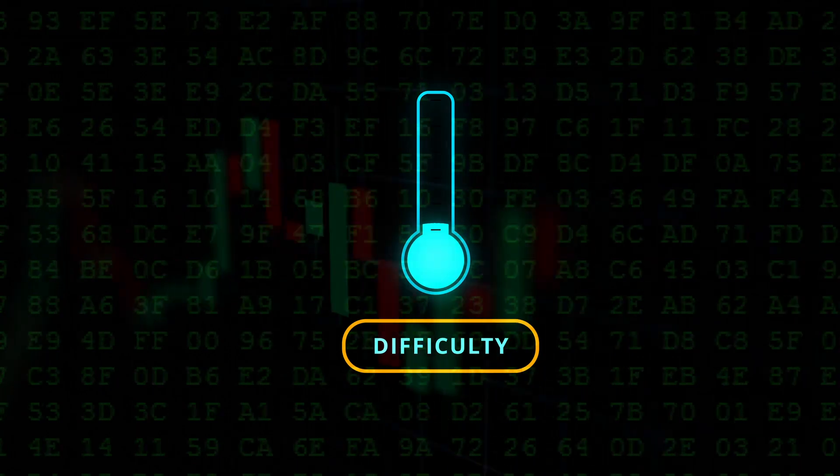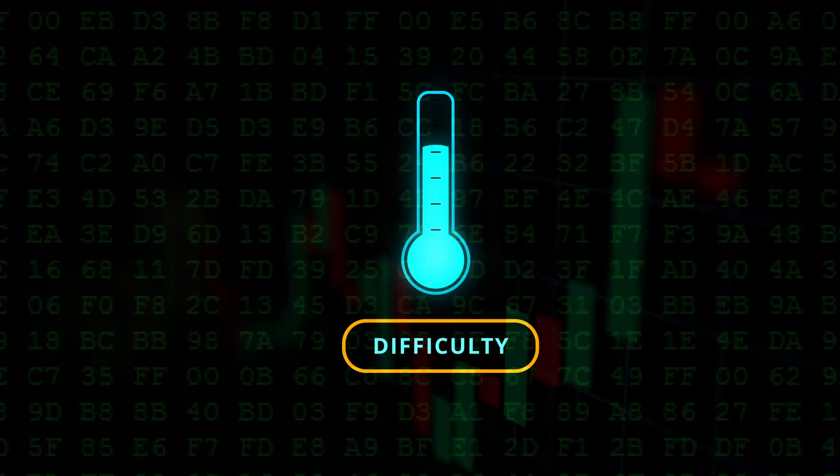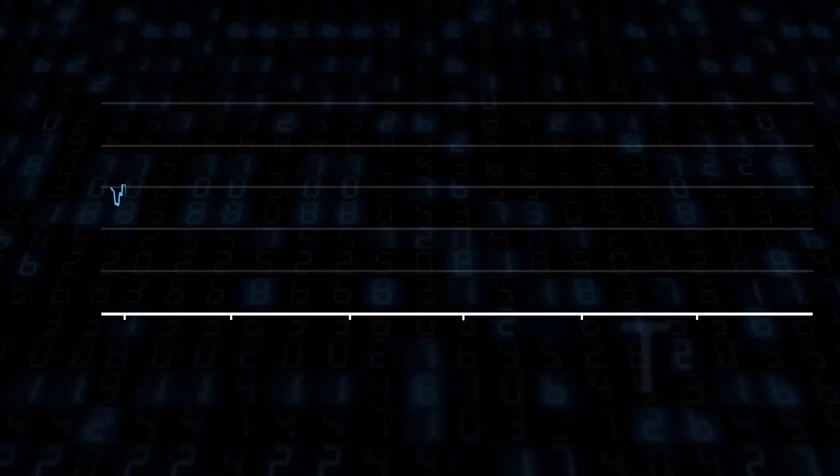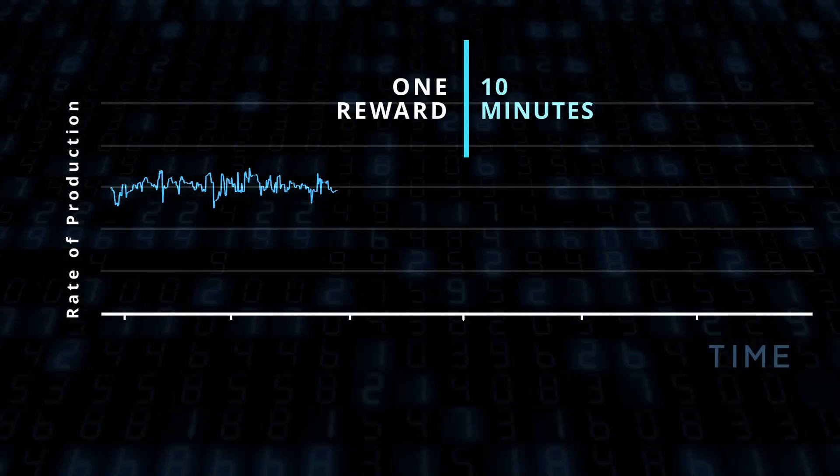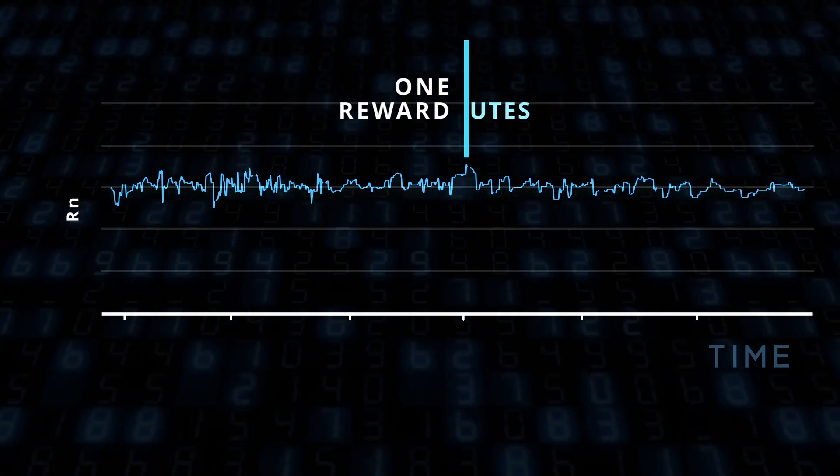Mining difficulty acts as a restoring force that counteracts the effects of price fluctuations and changes in hash rate. In consequence, the rate of production of each token oscillates close to the equilibrium value of one reward every 10 minutes.